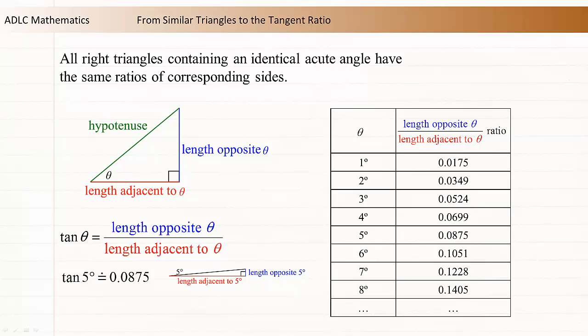The tangent of five degrees is approximately 0.0875. So for any right triangle with a five degree angle, if you divide the length of the side opposite the five degree angle by the length of the side adjacent to the five degree angle, you'll get approximately 0.0875.